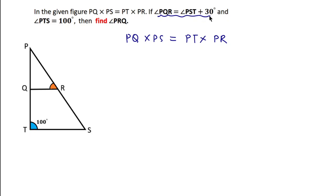This information means that QR will be parallel to TS, because Q is the midpoint of PT and R will also be the midpoint of PS.